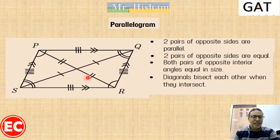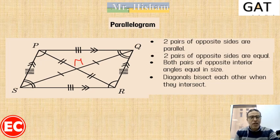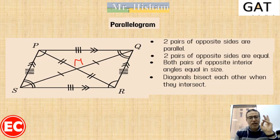The fourth property is that diagonals bisect each other. The diagonals are PR and QS. By 'bisect each other' I mean that if we call the intersection point M, then MQ equals MS, and PM equals MR. To summarize the parallelogram properties: each pair of opposite sides are equal and parallel, opposite angles are equal, diagonals bisect each other, and consecutive angles are supplementary.